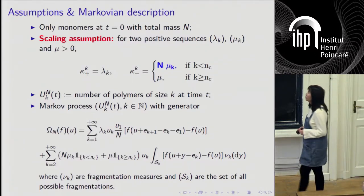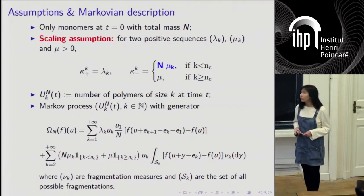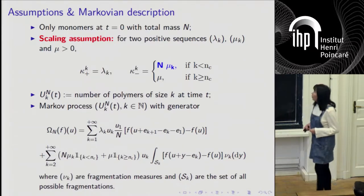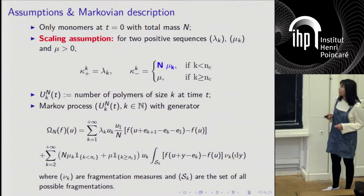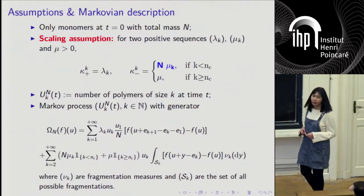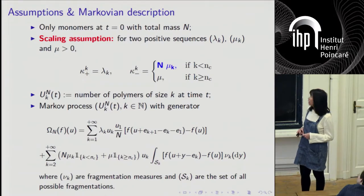We let U_k^N(t) be the number of polymers of size k at time t. This is an N-dimensional Markov process. We can easily write down the generator. We are going to study this N-dimensional process when N goes to infinity, because in the biology system the total mass usually is very large.